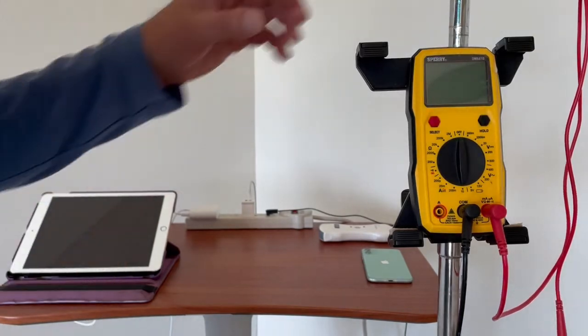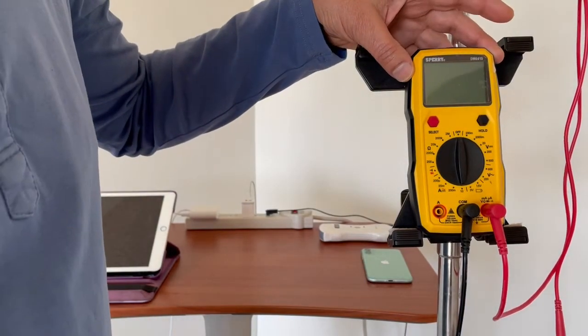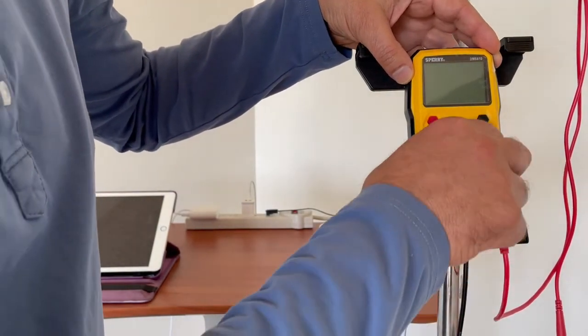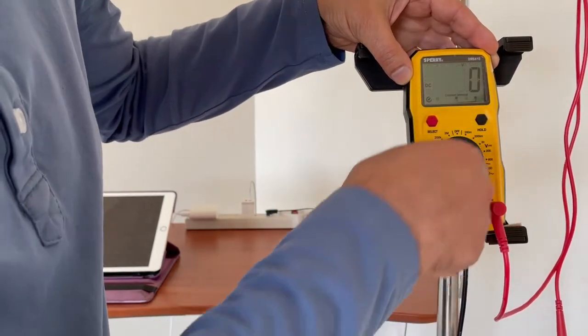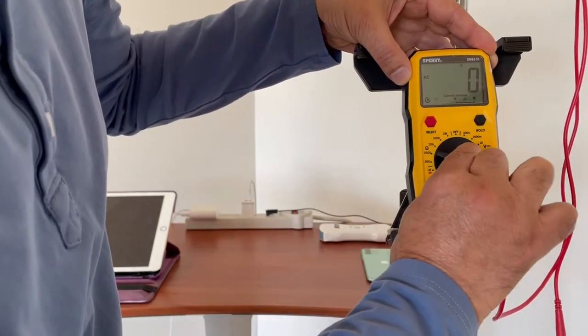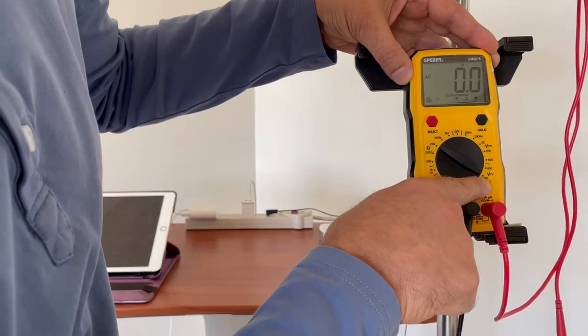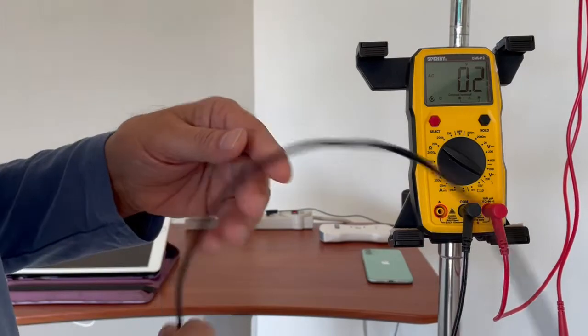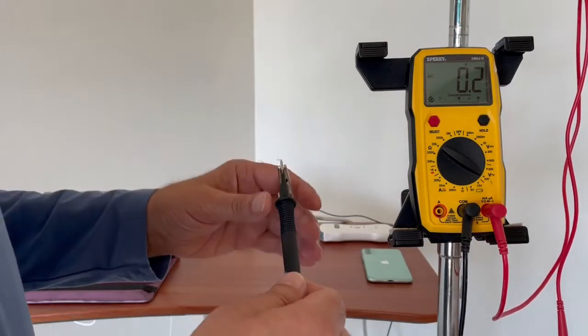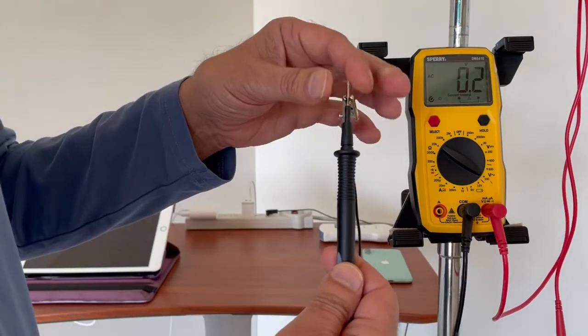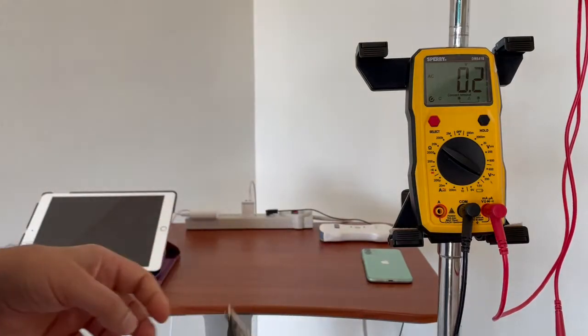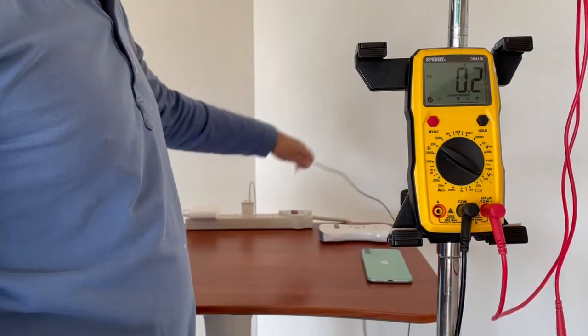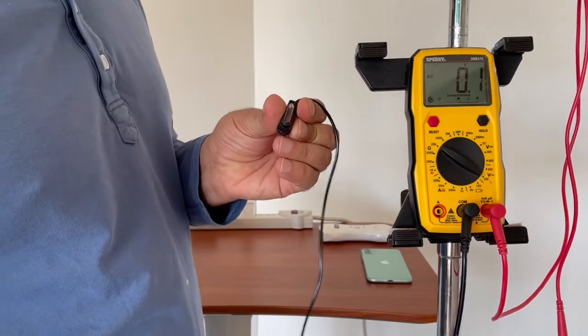You just need a simple voltmeter like this and you turn it to the alternating current at 200, the lower setting. You take the ground wire, the black, and you connect it to a second wire and this wire has a ground only plug.